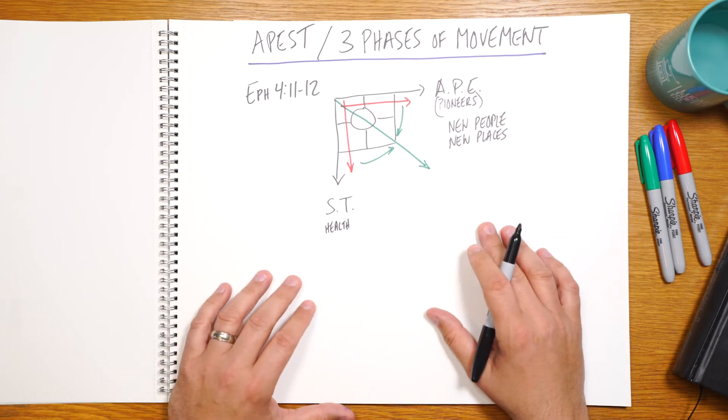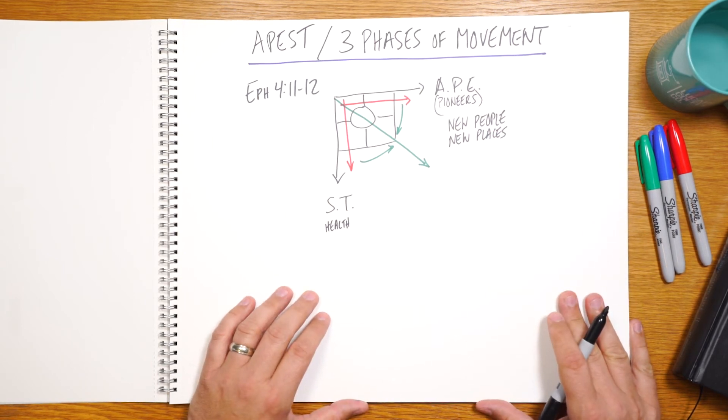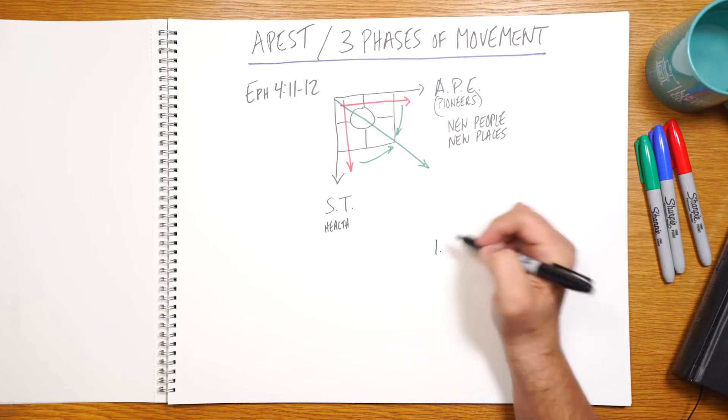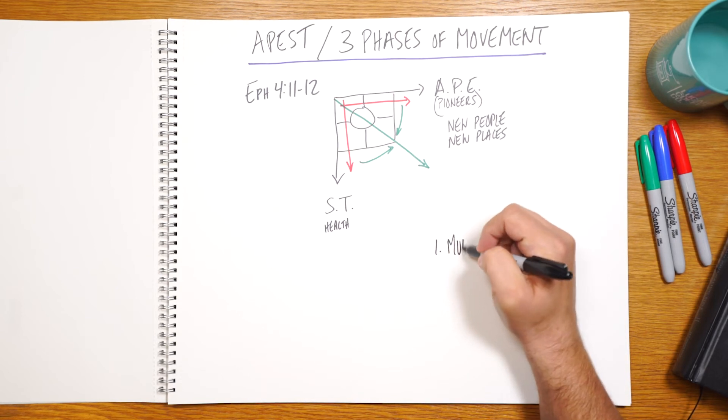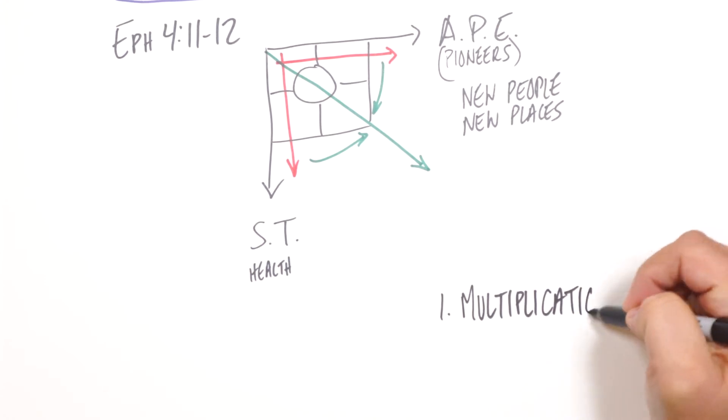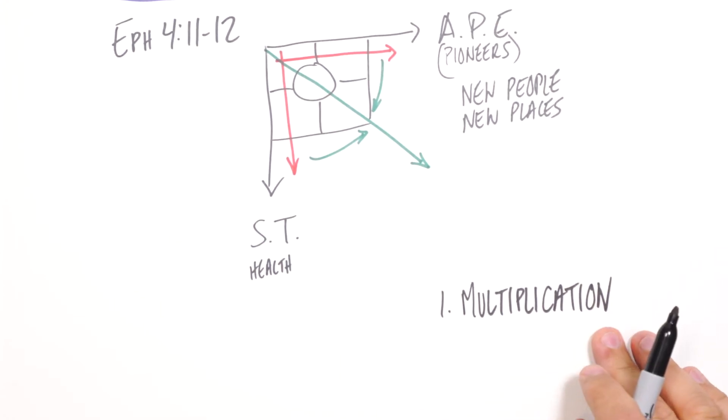So as we consider these different roles within a movement, we're noticing actually three phases of movement. And the first phase is what we're going to call multiplication, where we're seeing the gospel go out, disciples and groups and churches are multiplying, and the Holy Spirit is leading that work.